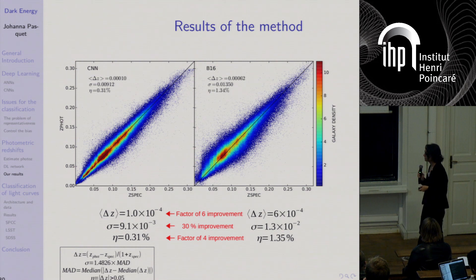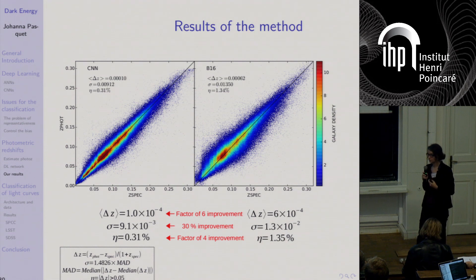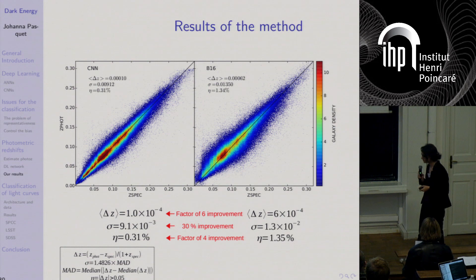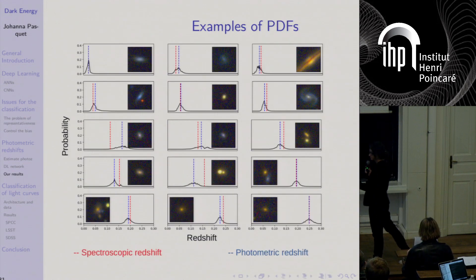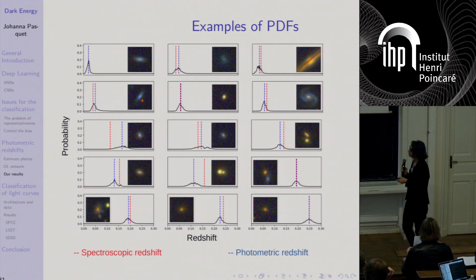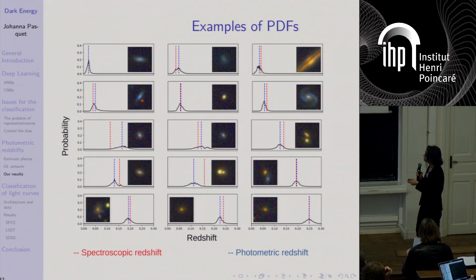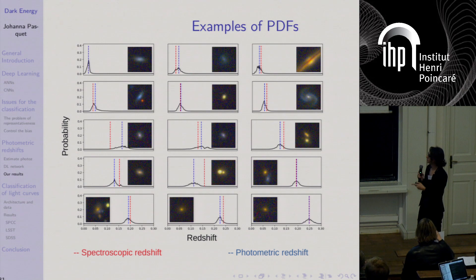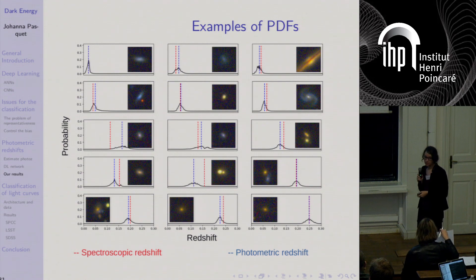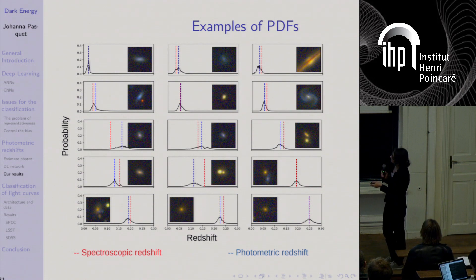Here are the results we obtain with the CNN on the left, compared to Beck et al. on the right — a method based on k-nearest neighbor. There are clear improvements in bias, dispersion, and fraction of outliers with our method, and there are no catastrophic redshifts. The example PDFs produced as output show the true value in red and the photometric redshift in blue — even in difficult cases with several objects on the image, the error is very small, which is really encouraging.